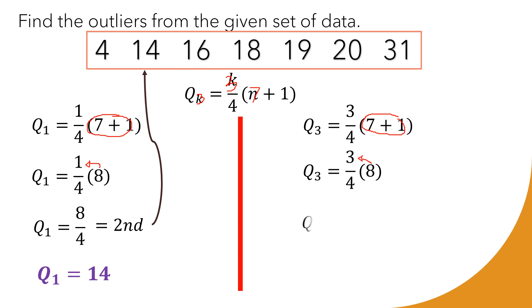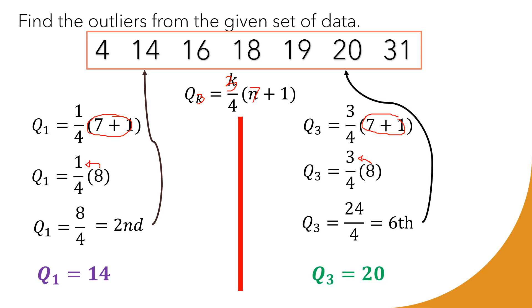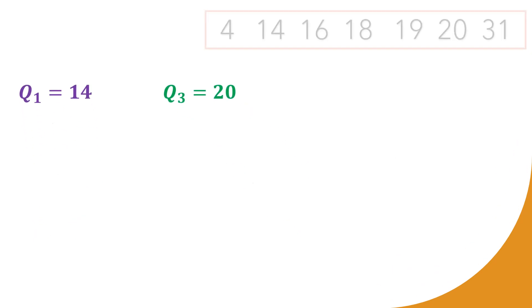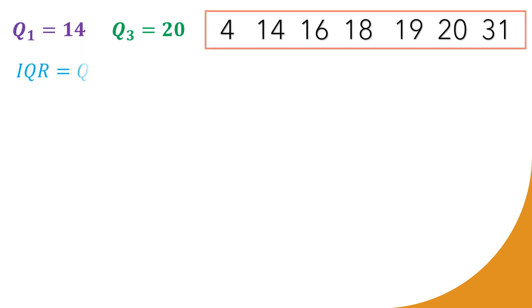Multiplying 8 by 3 gives us 24, and that value divided by 4 gives us 6. That 6 represents the position — it is the 6th value on our data set, which is 20. Therefore, Q3 = 20. The next step is to determine the interquartile range: IQR = Q3 − Q1 = 20 − 14 = 6.